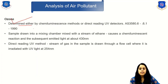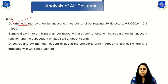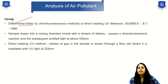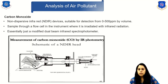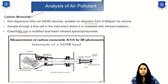For ozone, it is determined either by the chemiluminescence method or a direct-reading UV detector. In the chemiluminescence method, a sample is drawn into a mixing chamber and mixed with a stream of ethene, causing a chemiluminescence reaction with emitted light at about 430 nm. In the direct-reading UV method, a stream of gas passes through a flow cell irradiated with UV light at 254 nm. For carbon monoxide (CO), a non-dispersive infrared (NDIR) device is used, suitable for detection from 0 to 500 ppm by volume. The sample passes through a flow cell irradiated with infrared radiation, essentially using a modified dual-beam infrared spectrophotometer.